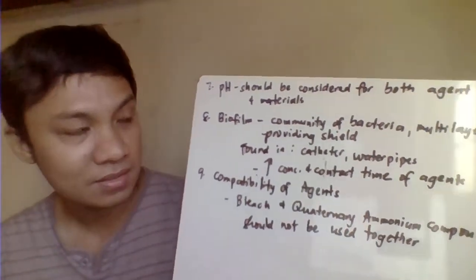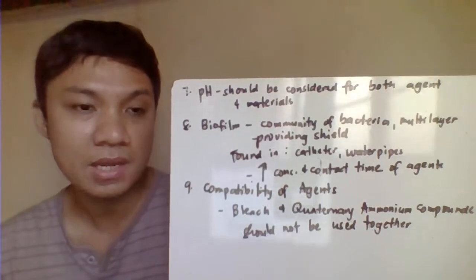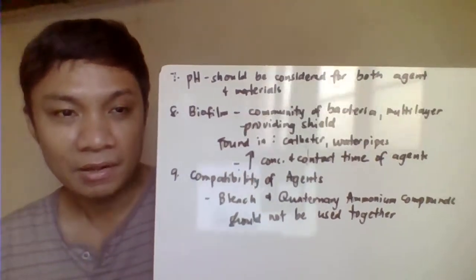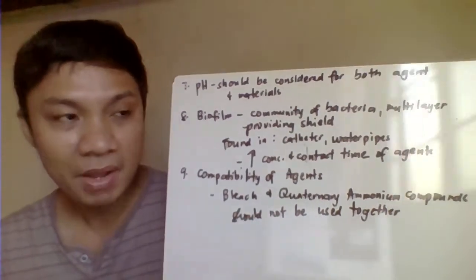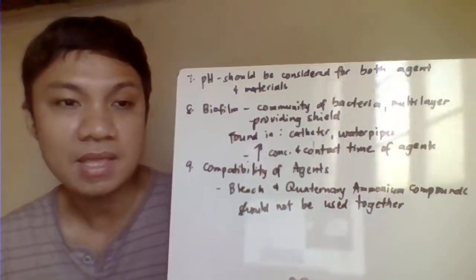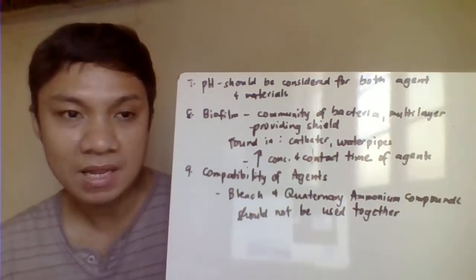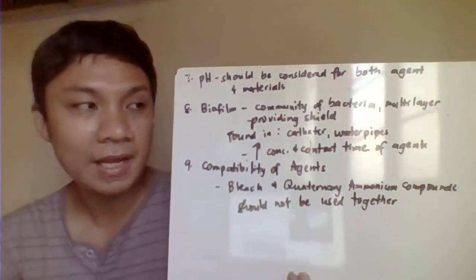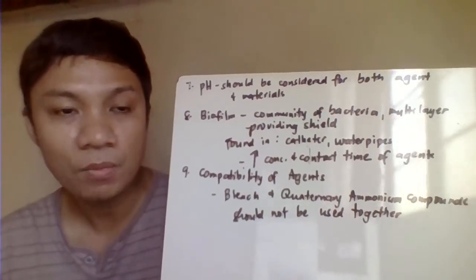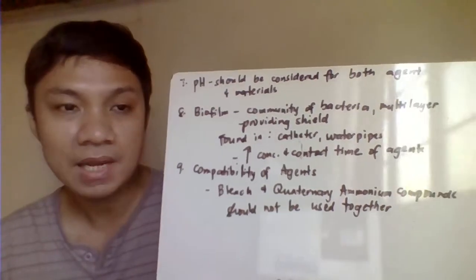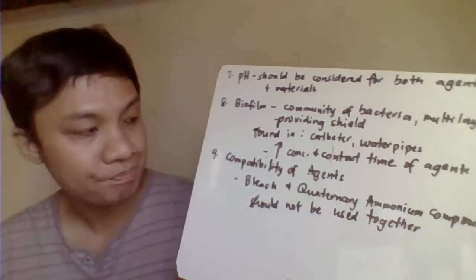Biofilm is another factor. A biofilm is a multi-layered community of bacteria covered by a film that provides a shield or protection, making it hard for agents to penetrate. If biofilm is suspected, you need to increase contact time and concentration of the agent. Biofilm is most likely to form on catheters or water pipes.